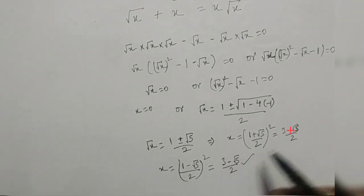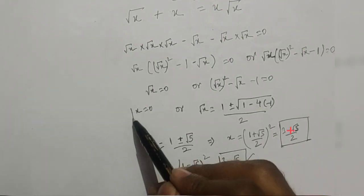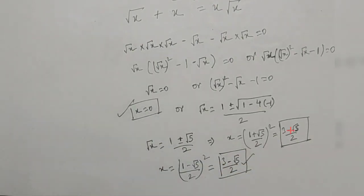So these are the values of x: this one, this one, and this one. Thanks.